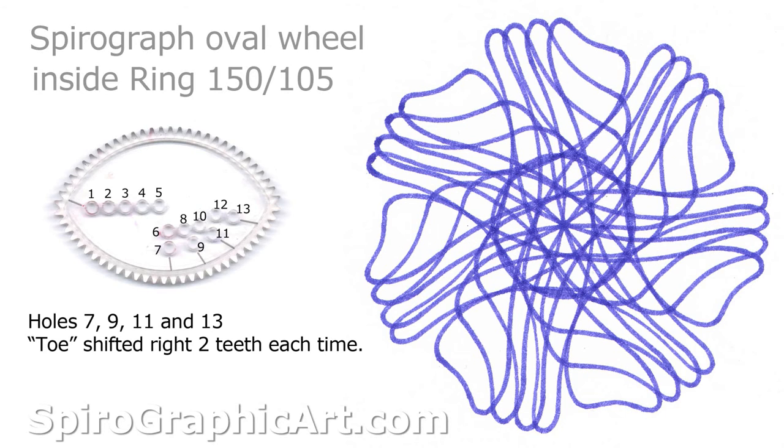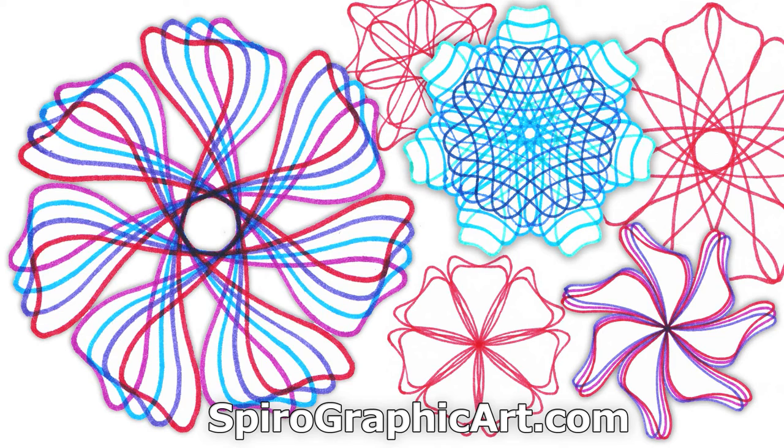So there's some things you can do with the oval wheel in the spirograph set. Hope you try this and have some fun and make your own designs. Experiment with colors and flipping the wheel over and using different holes and lining them up differently. If you haven't already subscribed, do so and you'll get notifications from YouTube about other videos I make. And visit the website at www.spirographicart.com